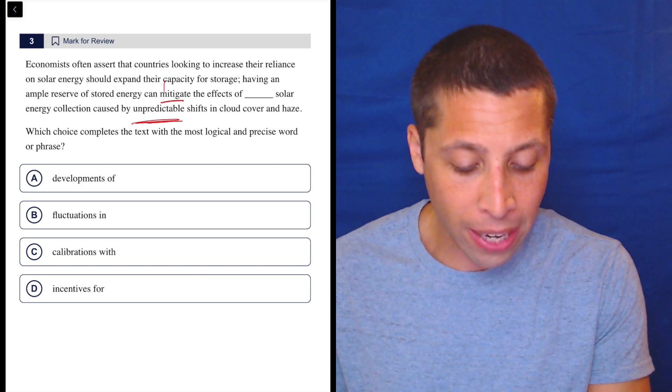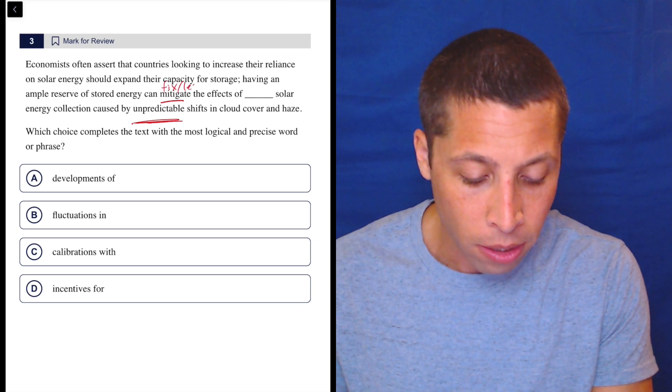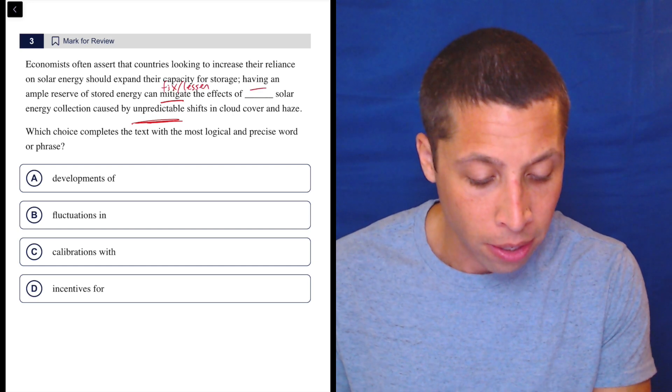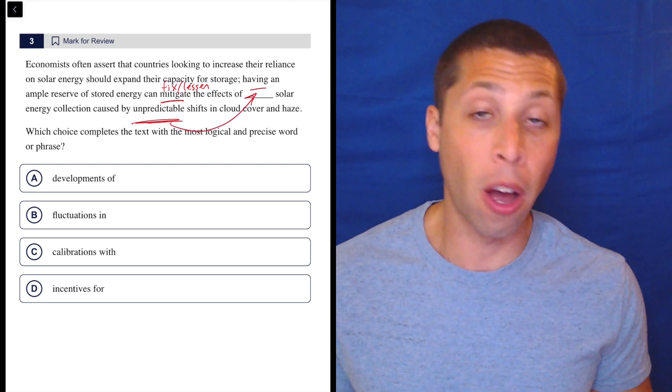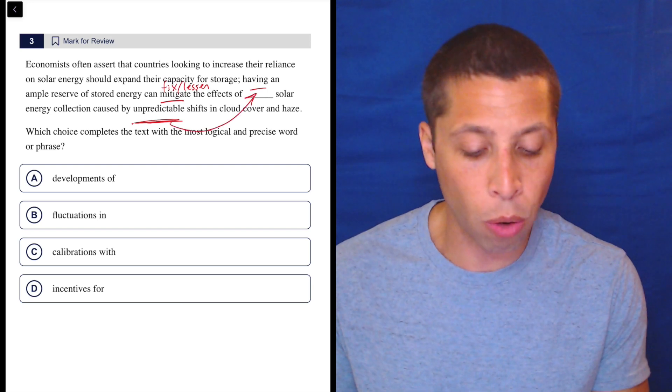So mitigate means to fix or lessen, right? So there's something bad here that we are worried about. It's something probably having to do with unpredictability, right? So we're talking about strong words.